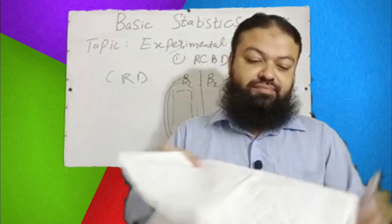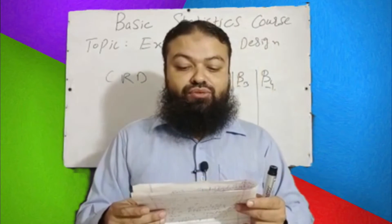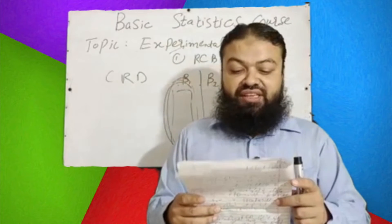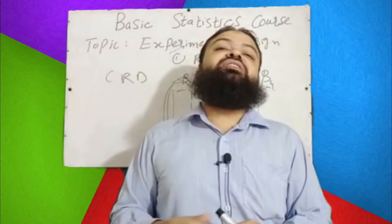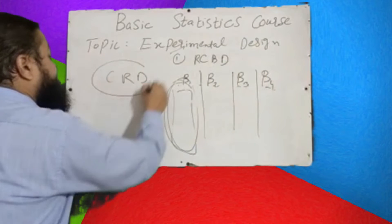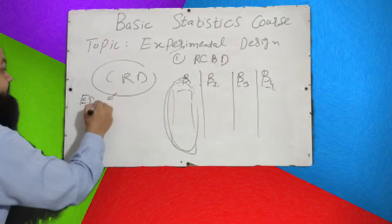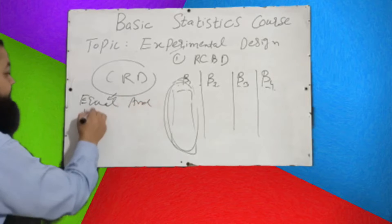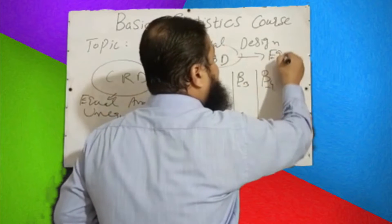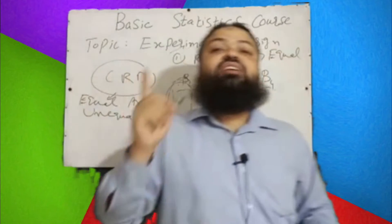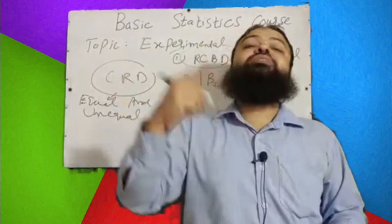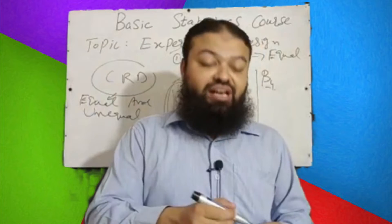Question number four: RCBD can be used with — a) equal replication; b) unequal replication; c) single replication; d) equal and unequal replication. In the last lecture, class 4, I told you CRD can be used for equal as well as unequal replication. But please keep in mind, RCBD is used only for equal replication. This question is important for all papers — written test of statistical officer, research officer, and admission tests for MPhil and PhD in all universities.